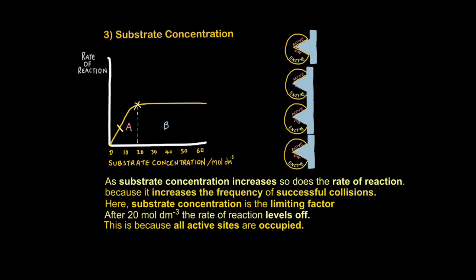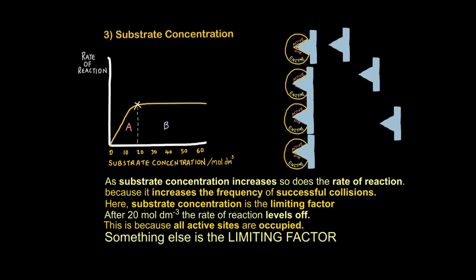But you'll notice what happens that as we continue to increase the substrate concentration, it's having no effect on the rate of reaction. The rate of reaction is not getting any faster. So beyond this point, something else becomes the limiting factor. The most obvious reason for this would be the lack of enzymes. You see now all the active sites are occupied. So if we add more substrate into the reaction, not much can happen because all active sites are being used. So the enzymes cannot help in the breakdown of these substrates. So after a concentration of 20 moles per decimeter cubed, the rate of reaction levels off. Notice how I've quoted figures here. It's good to always quote figures on your graph where relevant. And this is because all active sites are occupied. So something else is now the limiting factor.